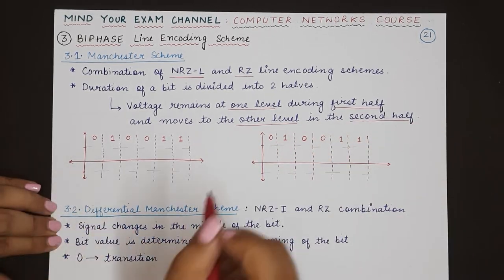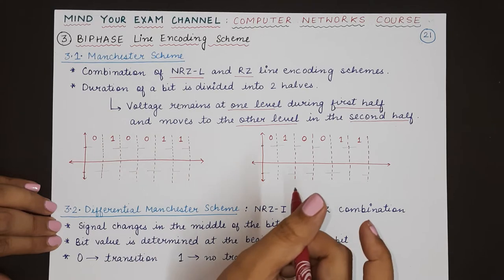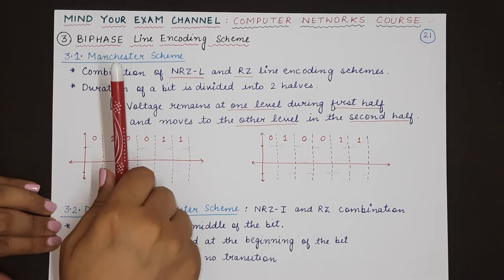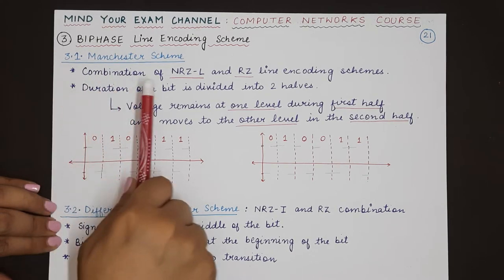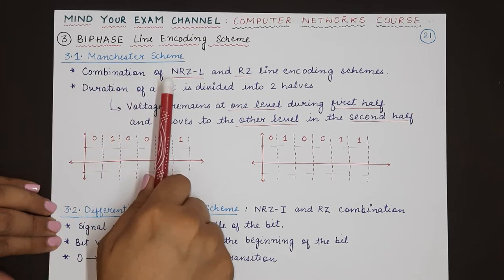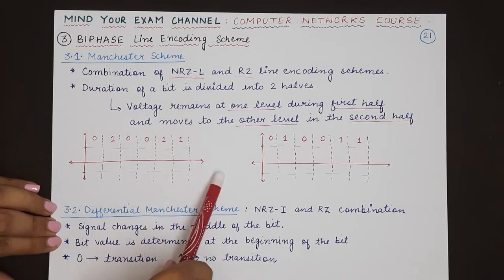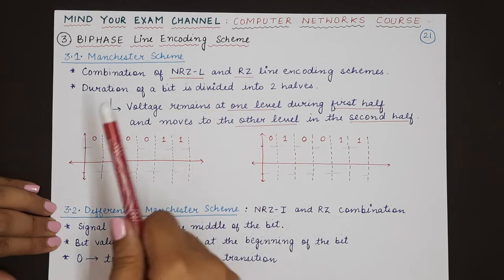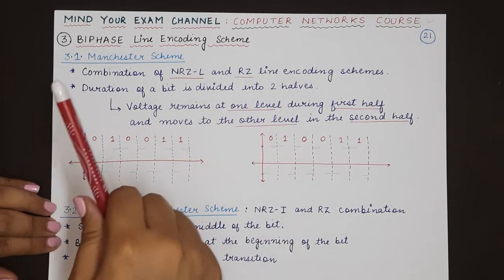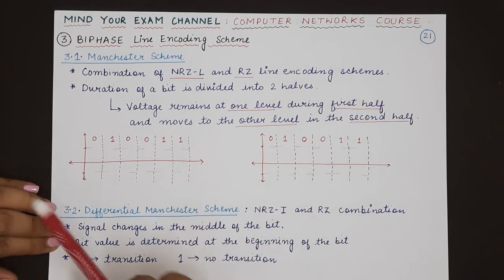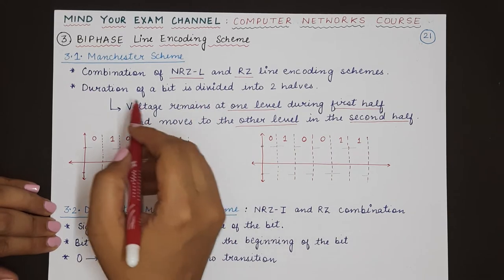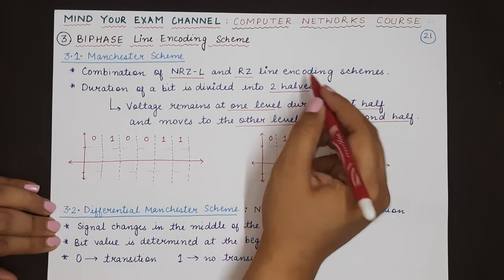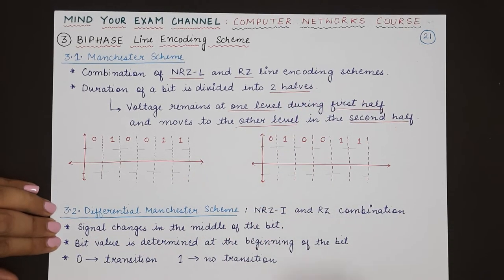When representing a bit, the entire bit duration is divided into two parts. In the first half, the signal level remains at one voltage, and in the second half it moves to the other voltage. This depends on whether the voltage is moving from positive to negative or from negative to positive. Each half represents a different signal level.